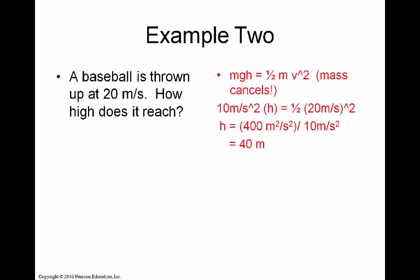Projectile problems are so much easier. A baseball is thrown up at 20 meters per second. How high does it reach? Once again, when it's thrown up at the beginning it has kinetic energy. When it gets to the top it has potential energy. mgh = ½mv². Plugging in, we get a height of 40 meters.